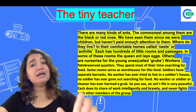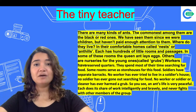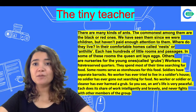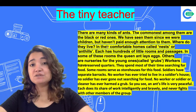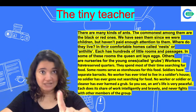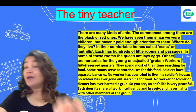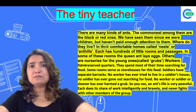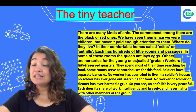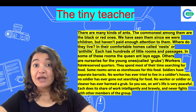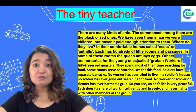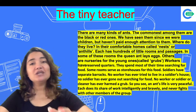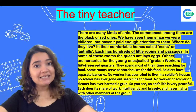There are many kinds of ants. The commonest among them are the black or red ones. We have seen them since we were children but haven't paid enough attention. Where do they live? In their comfortable home called nests or ant hills. They call their house a nest or ant hill.